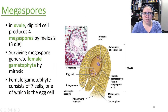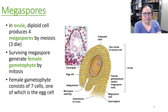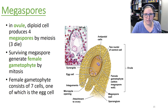In the ovule, a diploid cell produces four megaspores by meiosis, then three of those die. The surviving megaspore generates the female gametophyte generation by mitosis, and the female gametophyte consists of seven cells, one of which is the egg cell.